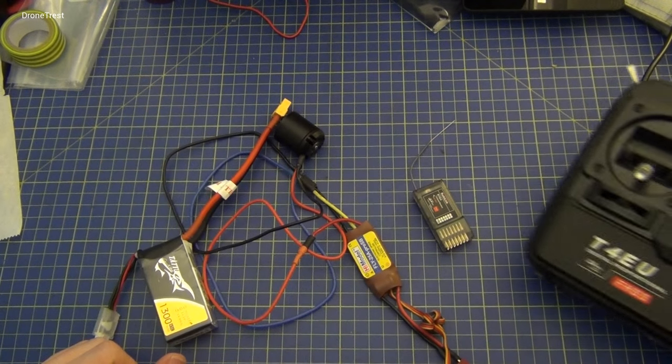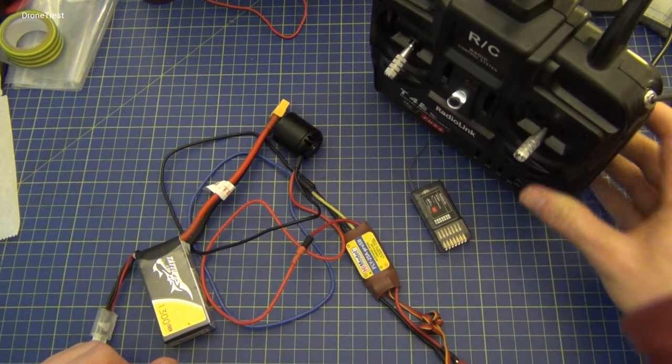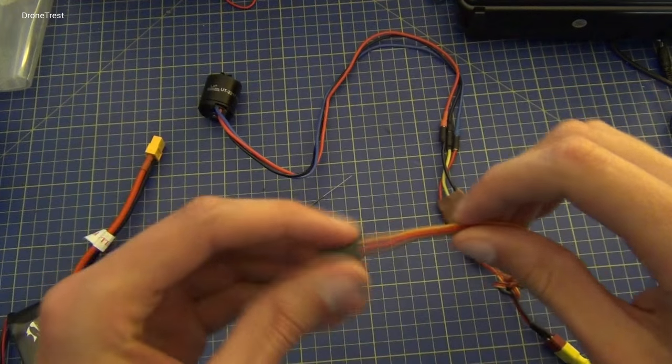Here we're using an ESC with a battery eliminating circuit, BEC. If your ESC does not have a BEC, you'll need to power your receiver with a separate 5V supply.